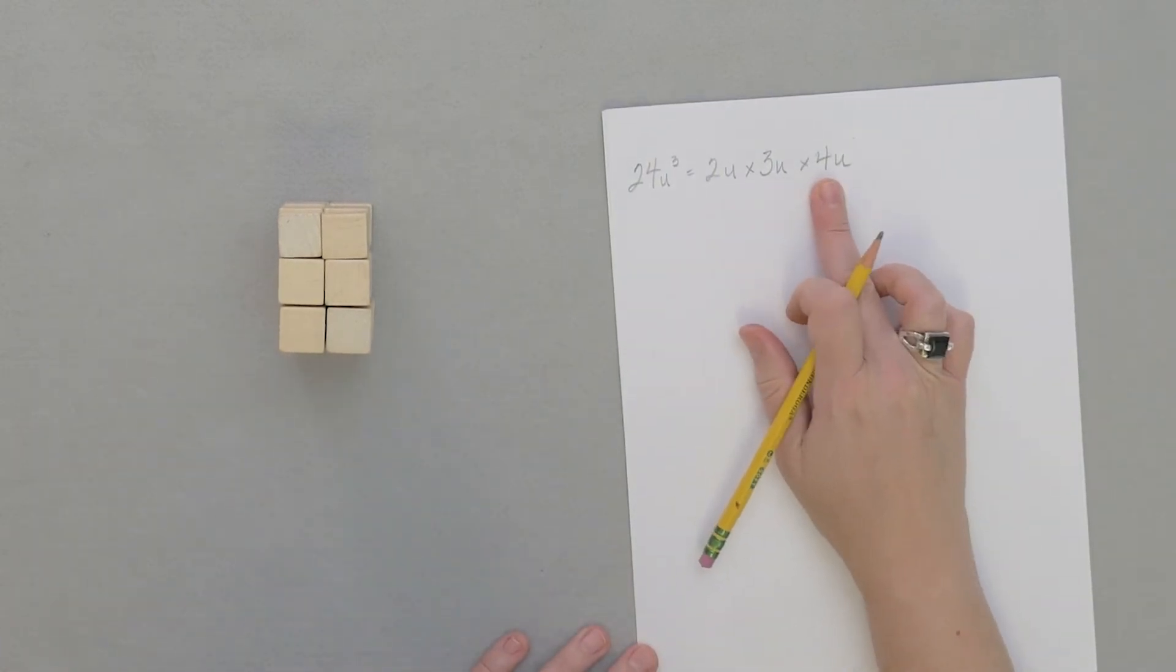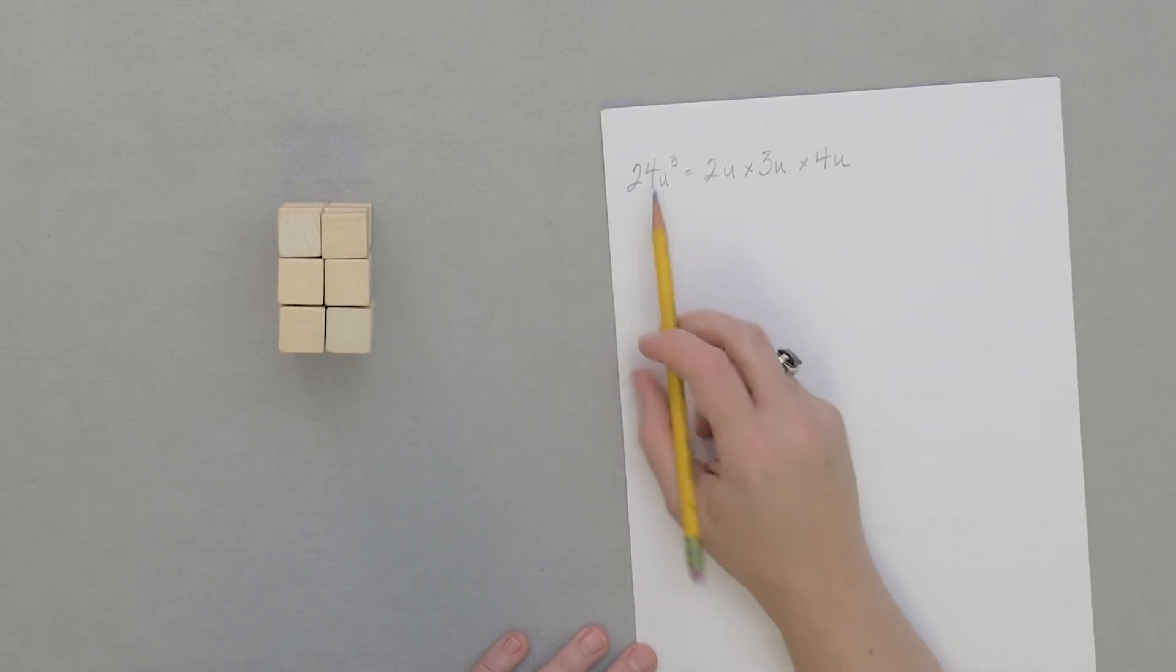2 times 3 times 4, oh yeah, that's 24. So that's how we got the 24 units cubed.